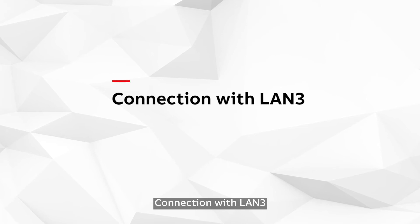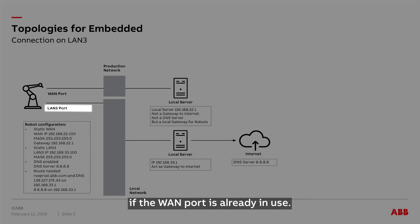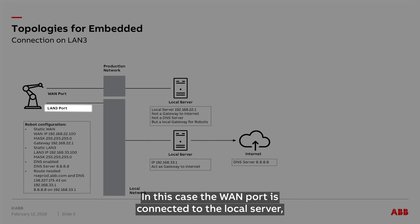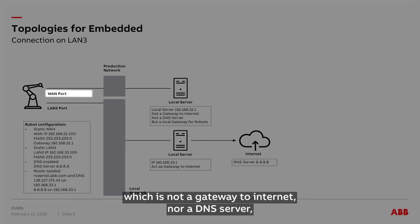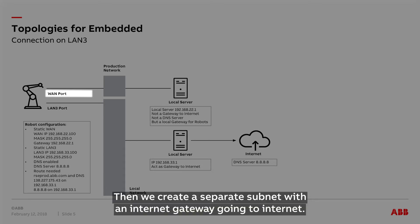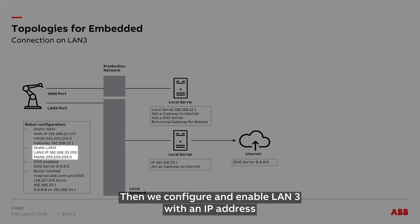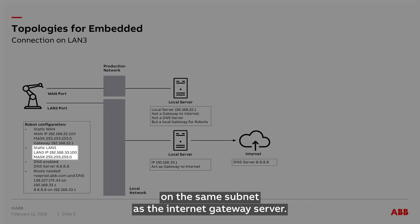Connection with LAN 3. We can use Connected Services on the LAN port 3 if the WAN port is already in use. The WAN port is connected to the local server, which is not a gateway to internet nor a DNS server, but has to be the gateway for the robot. We create a separate subnet with an internet gateway going to the internet. We keep the WAN configurations going to the local server, then configure and enable LAN 3 with an IP address on the same subnet as the internet gateway server.